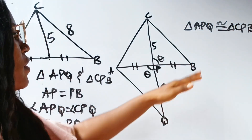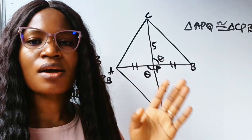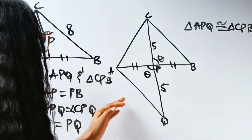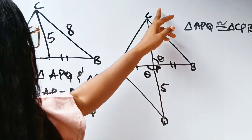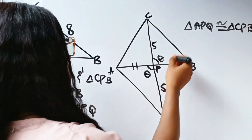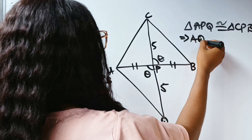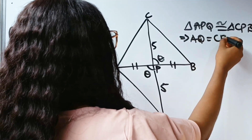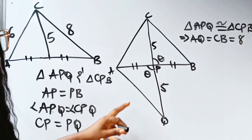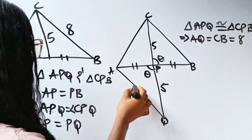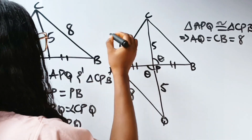Since the triangles are congruent, their corresponding sides are equal. This means AQ is equal to CB, which is equal to 8. So we can say AQ is 8, and we are already given that AC is 6.